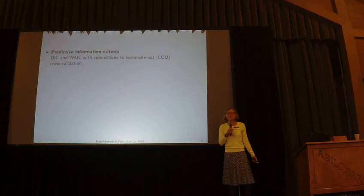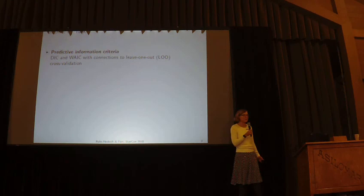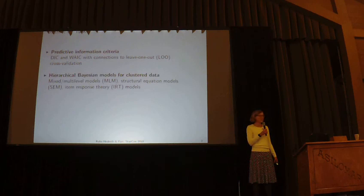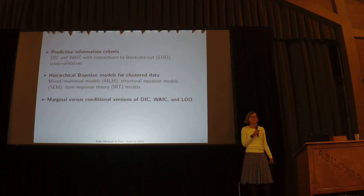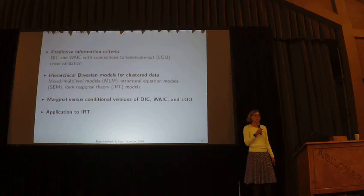First I'll define the predictive information criteria — that is the AIC, DIC, and leave-one-out — showing the connection to leave-one-out cross-validation. Then I'll say what I mean by hierarchical Bayesian models for clustered data, and examples of these are mixed or multilevel models (MLMs), structural equation models (SEMs), and item response theory models. Then, for these models, there's an important distinction between marginal and conditional versions of the information criteria. Dan will illustrate the importance of making those distinctions through an example in item response theory, or IRT.